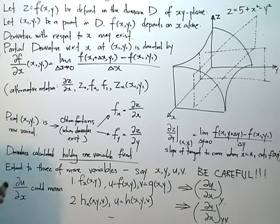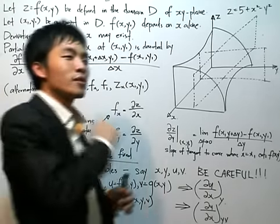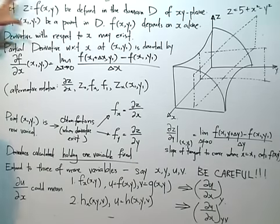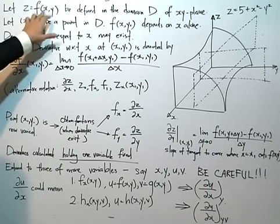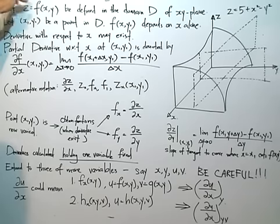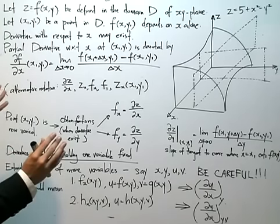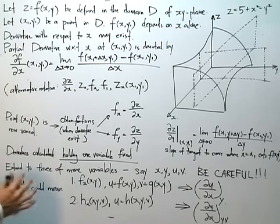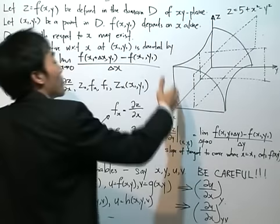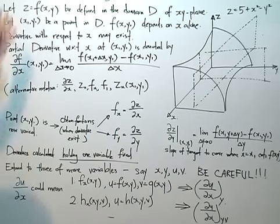So what we start out with is a function in terms of one variable. Now when we go into partial derivatives, we're dealing with a function in terms of two variables. So now I have a function F in terms of X and Y. The dependent variable Z is equal to a function applied to two independent variables X and Y. X and Y are the independent variables because they are able to vary independently, and the function is defined in the domain D of the XY plane - no surprise there, since the two independent variables are X and Y.